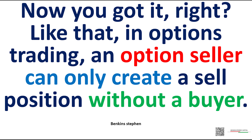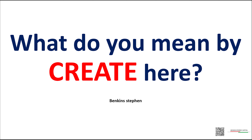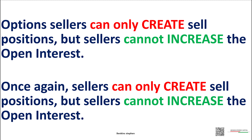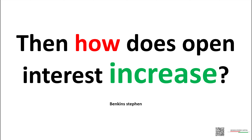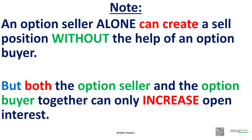Now you got it, right? Like that, in options trading, an option seller can only create a sell position without a buyer. Take note of one more important thing: in this video, we have used the word 'create' many times — like 'option sellers only can create sell positions.' Sellers can only create sell positions, but sellers cannot increase the open interest. Open interest increases only after a buyer buys from the created seller. An option seller alone can create a sell position without the help of an option buyer, but both the option seller and option buyer together can only increase open interest.